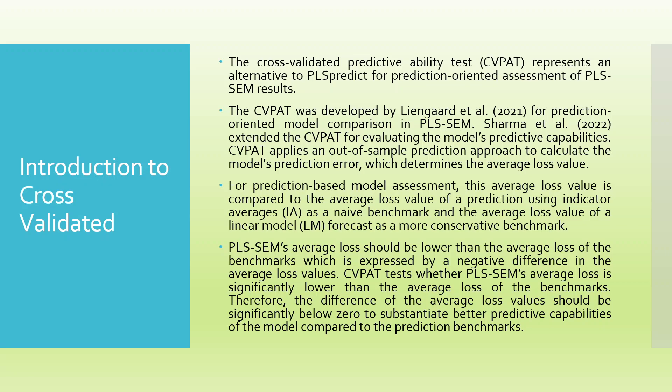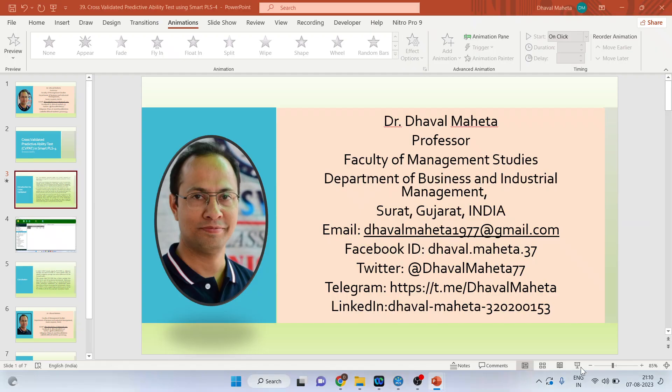Therefore, the difference in average loss value should be significantly below zero to substantiate better predictive capabilities of the model compared to the prediction benchmark. Now, I will explain this entire concept in SmartPLS-4.